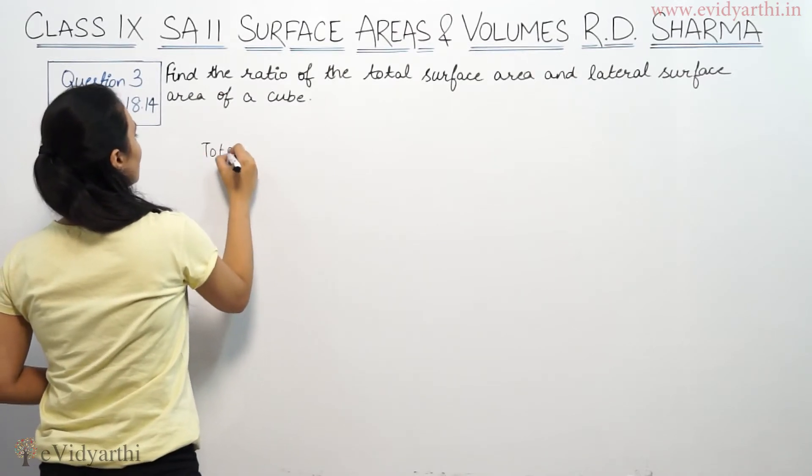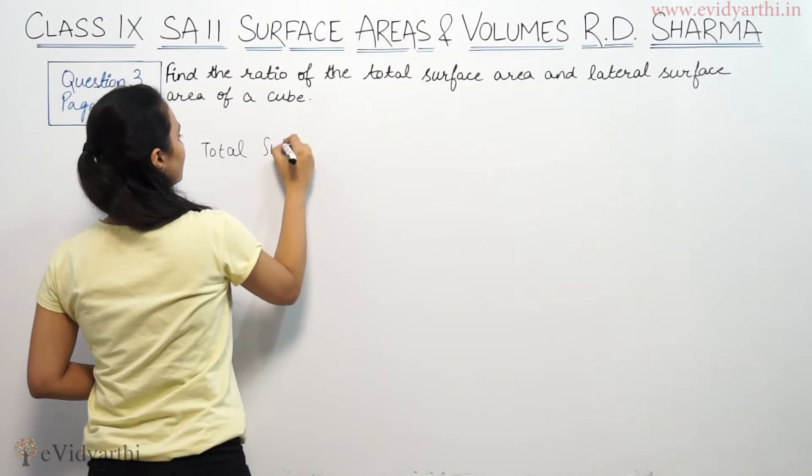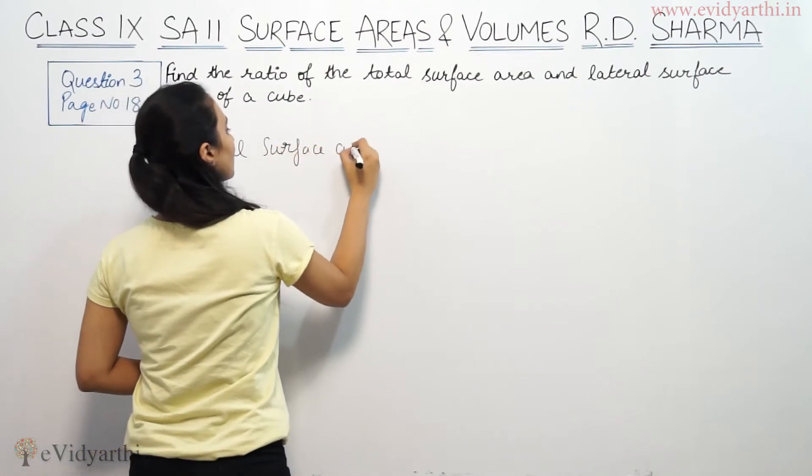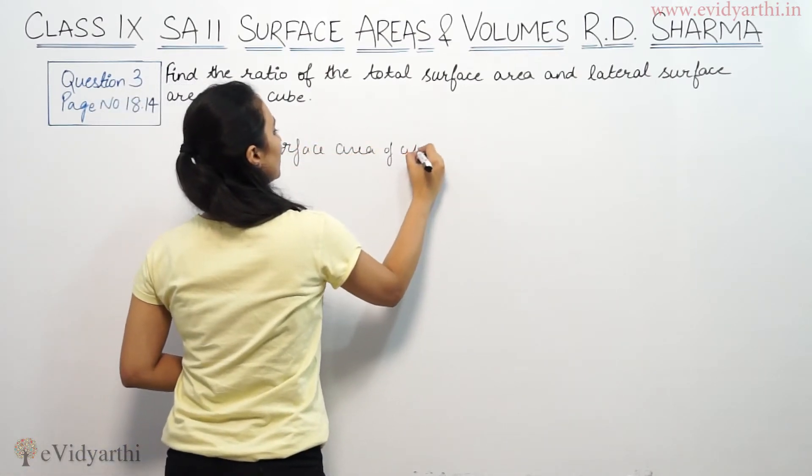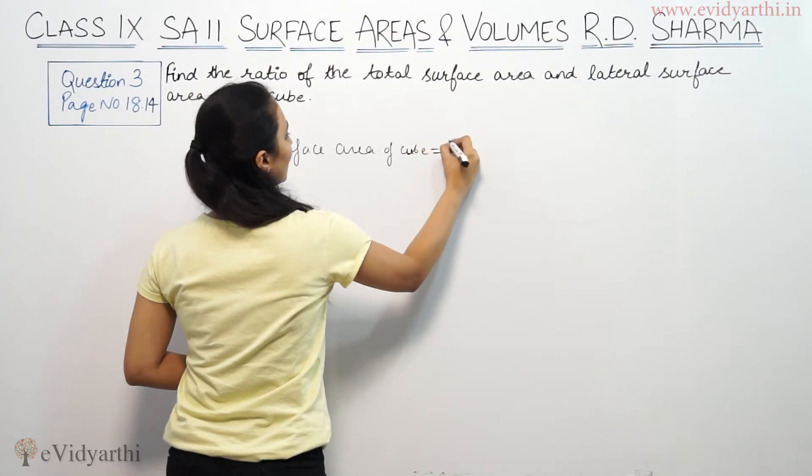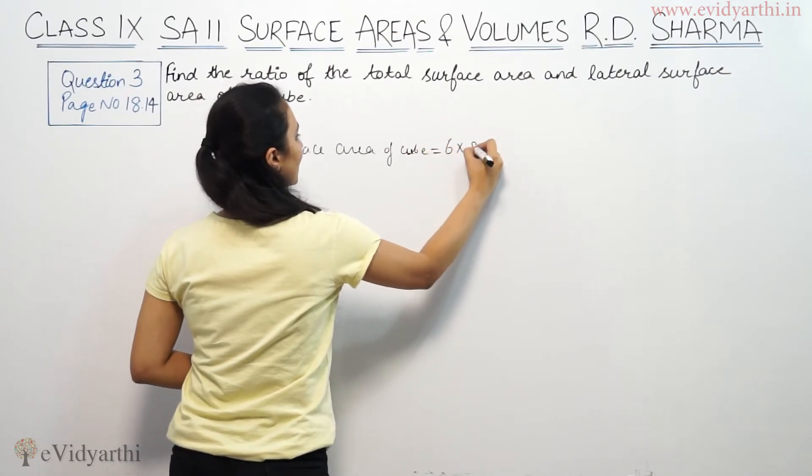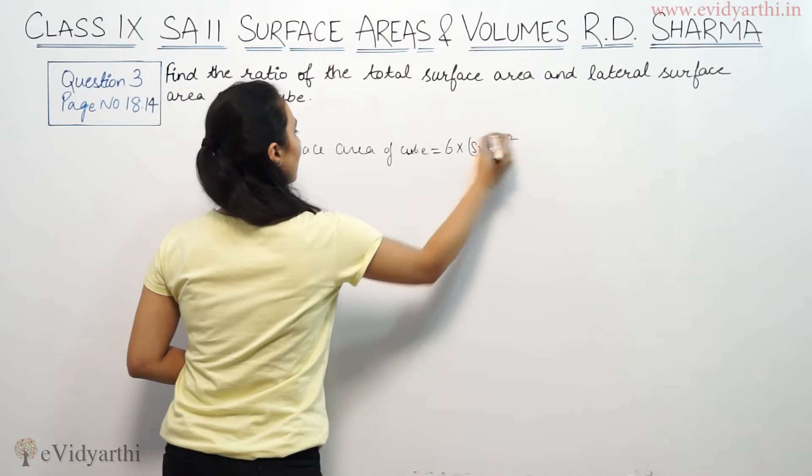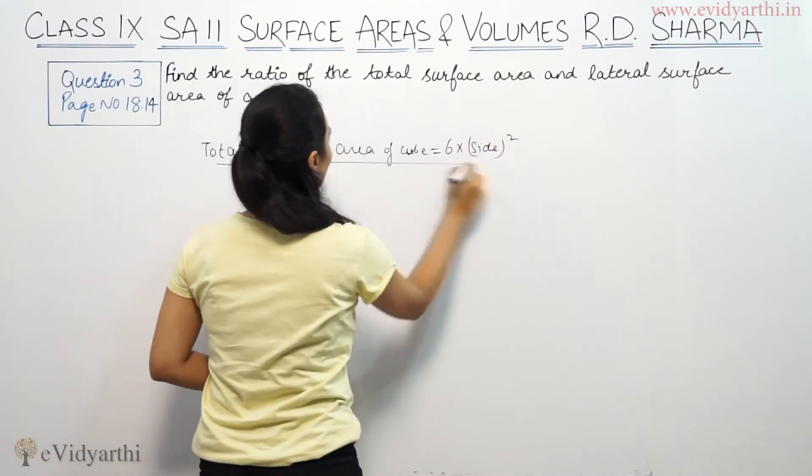Total surface area of cube is 6 into side squared, and lateral surface area...